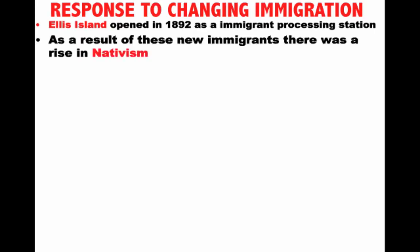As a result, you get a response to the changing immigration patterns. Many of the immigrants who came over were processed starting in 1892 through Ellis Island, an immigrant processing station in New York Harbor. Just like with the old immigrants — the Irish and Germans — we had the Know-Nothing Party; you have a rise of nativism. Except unlike with the Irish and Germans, this one is going to be much more intense.